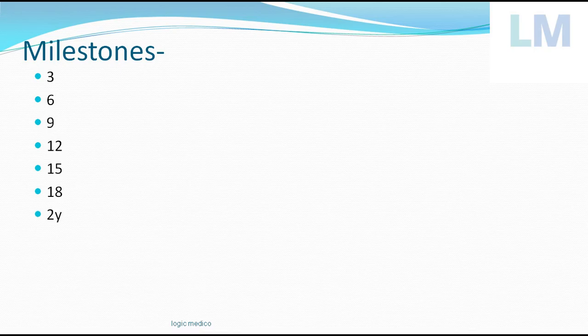The mnemonic is: 3 months intervals from 3 months all the way to 18 months — so 3, 6, 9, 12, 15, 18 months. After 18 months, assessment moves to yearly intervals: 2 years, 3 years, 4 years, 5 years. So developmental milestone assessment runs from birth up to 5 years of age.